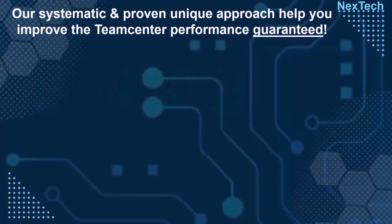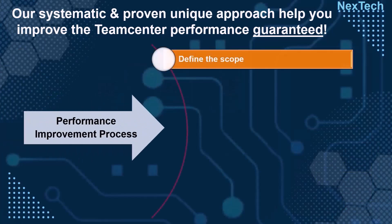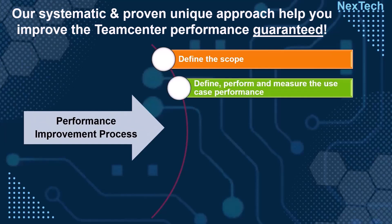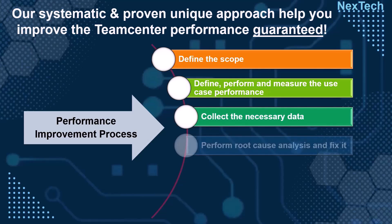To find the root cause of performance problems, we need to follow a systematic and proven approach that starts with defining the scope of the performance problem. Once the scope is finalized, we define repeatable use cases, perform and measure the performance, collect data, and work through the usual suspects where performance problems generally occur. Finally, we perform root cause analysis and fix the problem.